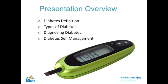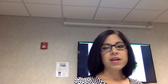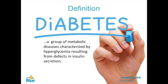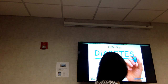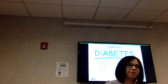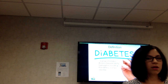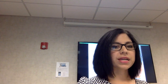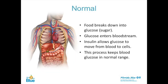Today we'll talk about what diabetes actually is, the types of it, how we find out if we have it, and what we do once we know. There's a very fancy definition: a group of metabolic diseases characterized by hyperglycemia resulting from defects in insulin secretion. Basically, it's about how your body functions with the sugar we put in it. A normal body takes food and drinks, moves sugar into the bloodstream and cells, and uses it as energy.